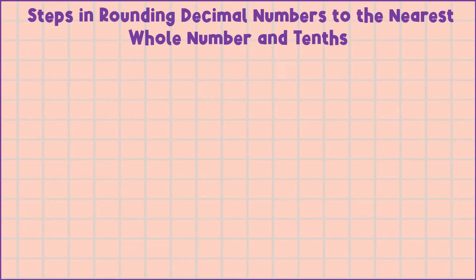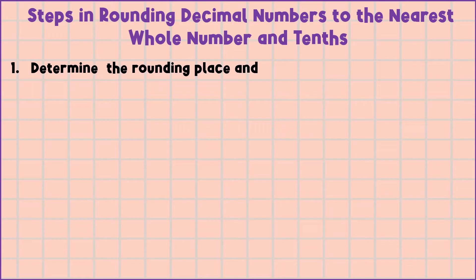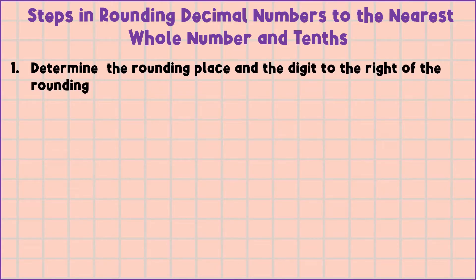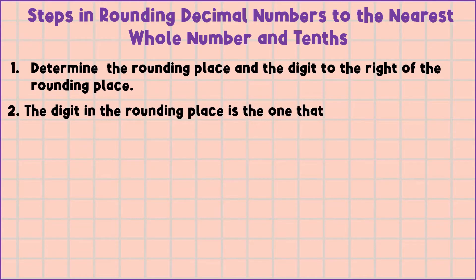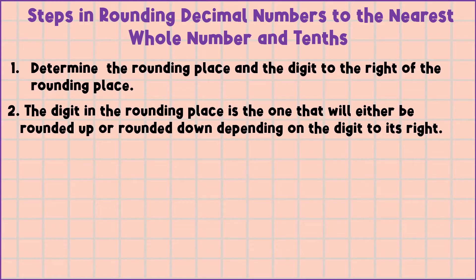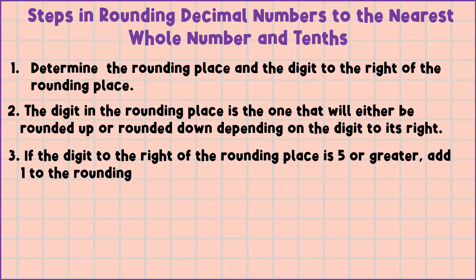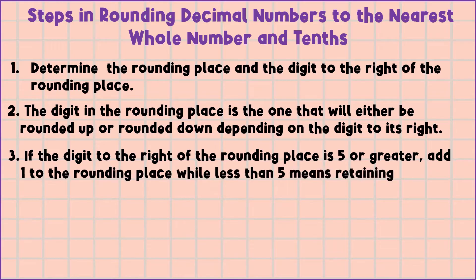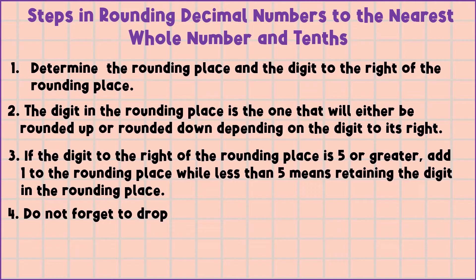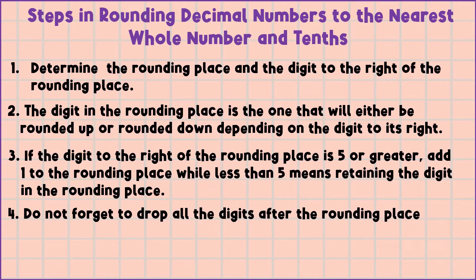These are the steps in rounding decimal numbers to the nearest whole number and tenths. 1. Determine the rounding place and the digit to the right of the rounding place. 2. The digit in the rounding place is the one that will either be rounded up or rounded down depending on the digit to its right. 3. If the digit to the right of the rounding place is 5 or greater, add 1 to the rounding place, while less than 5 means retaining the digit in the rounding place. 4. Do not forget to drop all the digits after the rounding place.